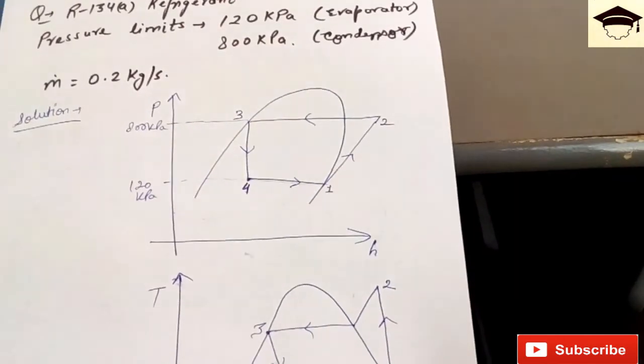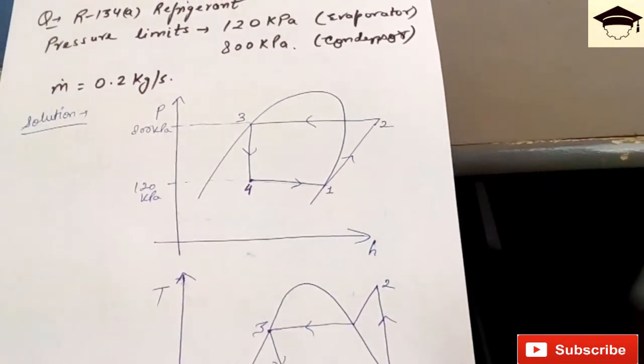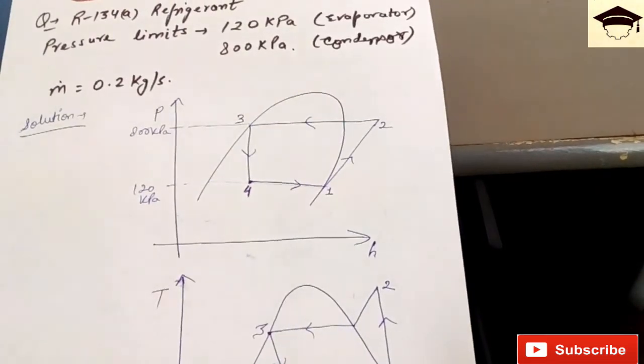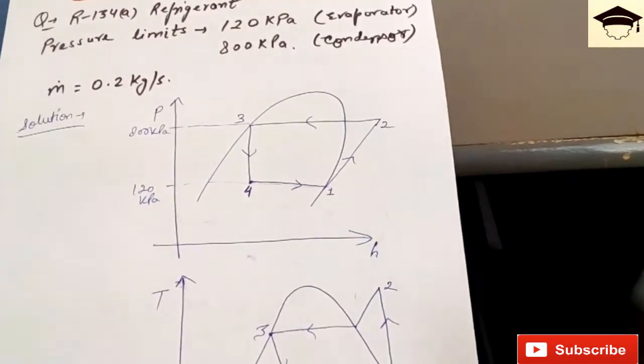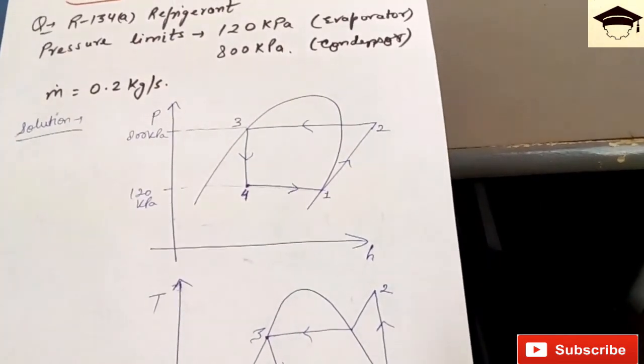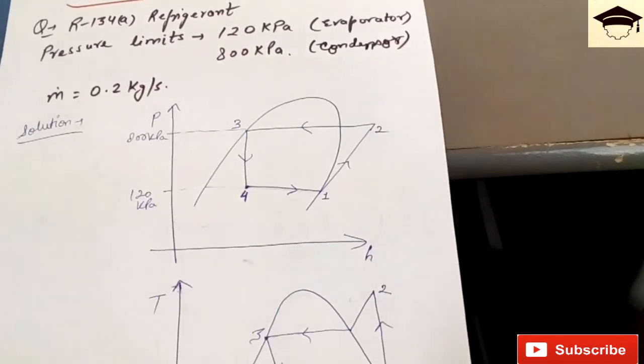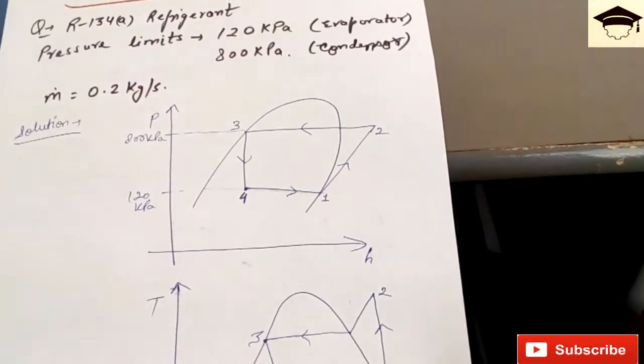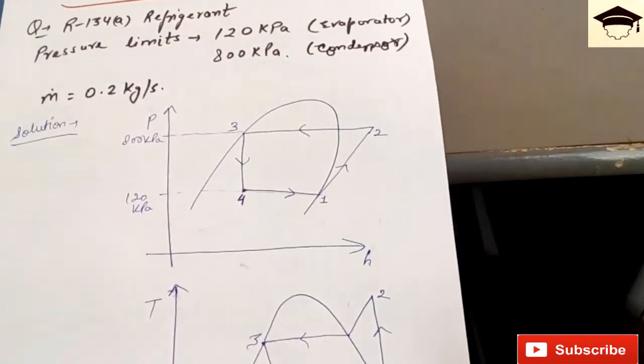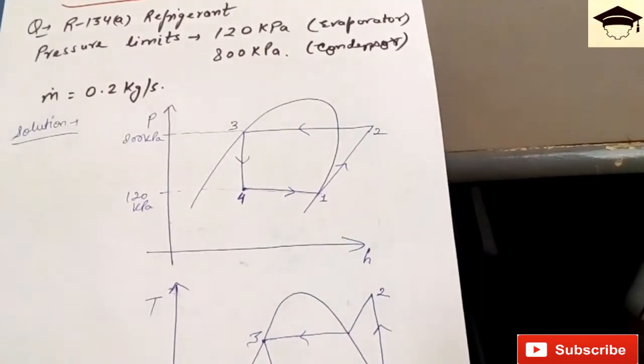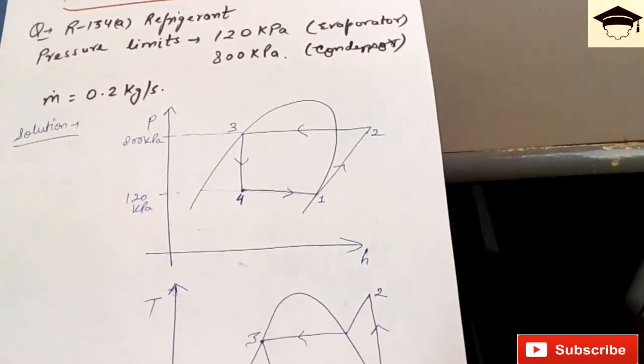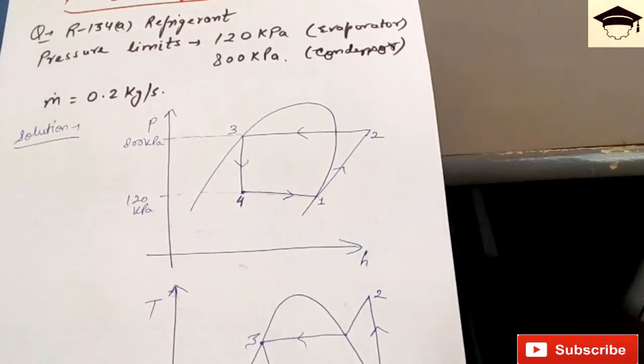So points 1, 3, and 4 are known. How to find point 2? Now extend the line of 800 kilopascal to the right and from point 1 you see a constant entropy line that should be passing from point 1. Now you have to travel along the constant entropy line from point 1 up till 2.